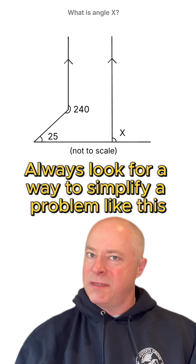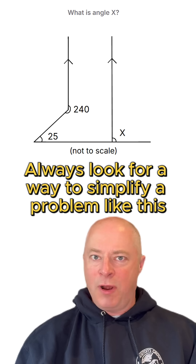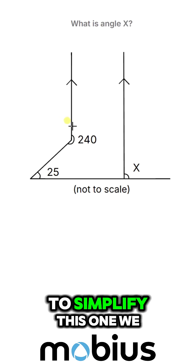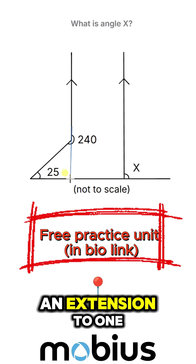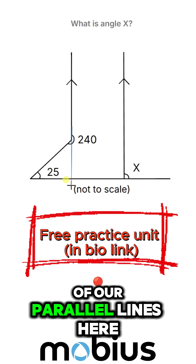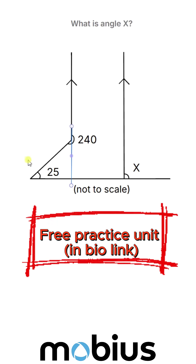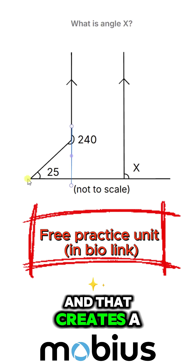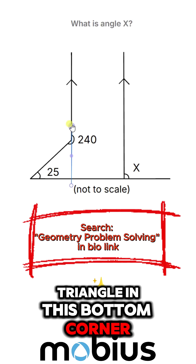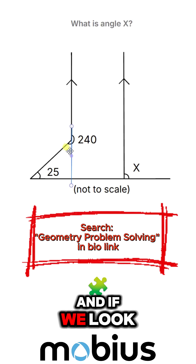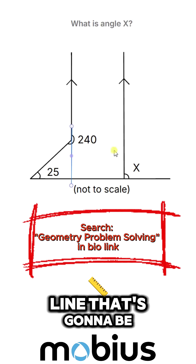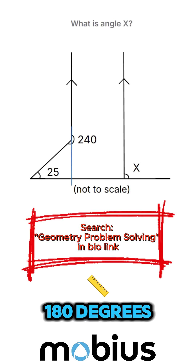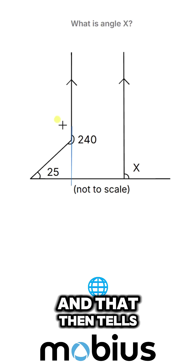Always look for a way to simplify a problem like this. To simplify this one, we can add an extension to one of our parallel lines, and that creates a triangle in this bottom corner. If we look at this part of the angle, which is a straight line, that's going to be 180 degrees.